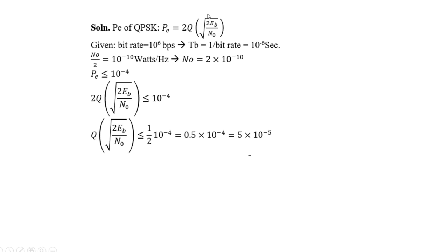The bit rate is 10^6, so the bit duration Tb equals 1 divided by the bit rate, which is 10^-6 seconds. N0/2 is the noise power spectral density given as 10^-10 watts per hertz, so N0 equals 2 times 10^-10. Substituting these values into the equation — 2 times Q of square root of Eb/N0 less than or equal to 10^-4 — and rearranging, we get Q of square root of Eb/N0 less than or equal to 0.5 times 10^-4, which is 5 times 10^-5.